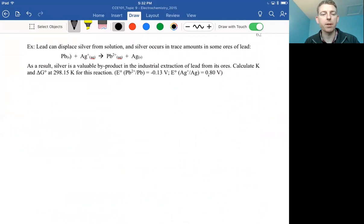The example says: Lead can displace silver from solution, and silver occurs in trace amounts in some ores of lead. So this is a handy reaction we might want to try to replace silver that's in solution that we might want to plate out or just get as silver metal and replace it with something cheap like lead. Silver can be a valuable byproduct in the industrial extraction of lead from its ores. If we want to calculate K—the equilibration constant—and delta G at 298.15 Kelvin for this reaction, it gives you the half-reaction standard reduction potentials for the two halves.